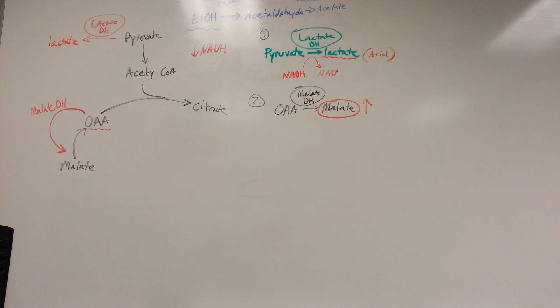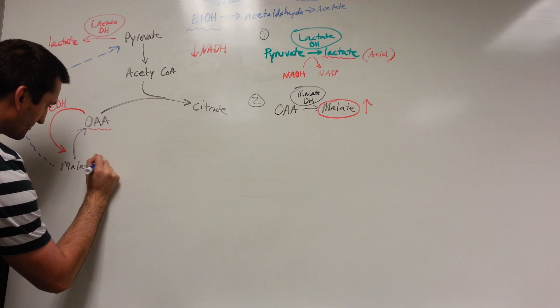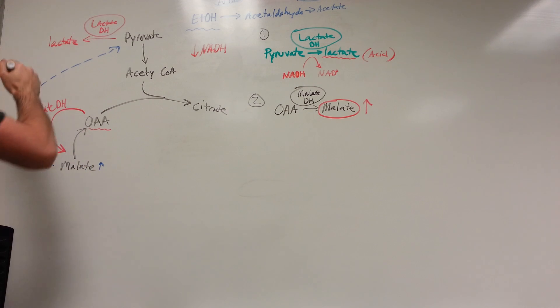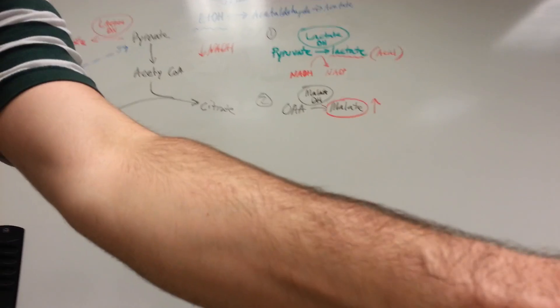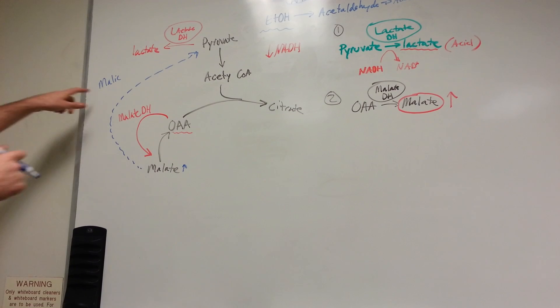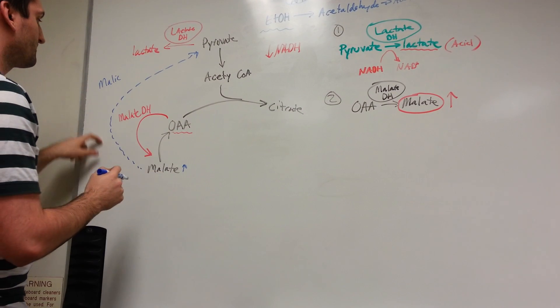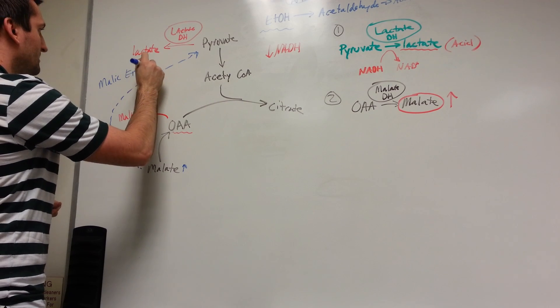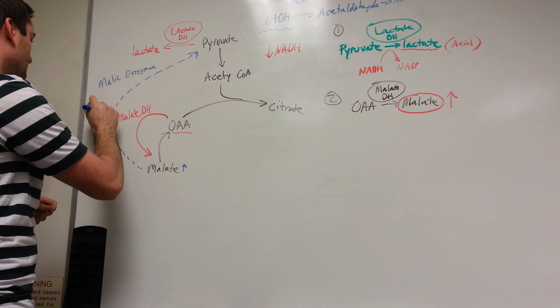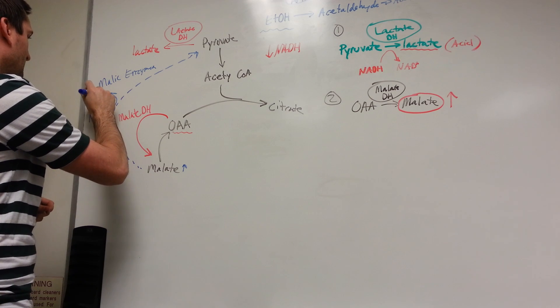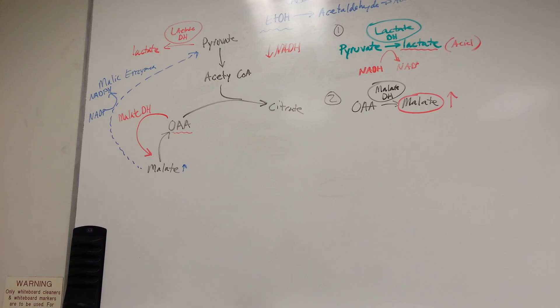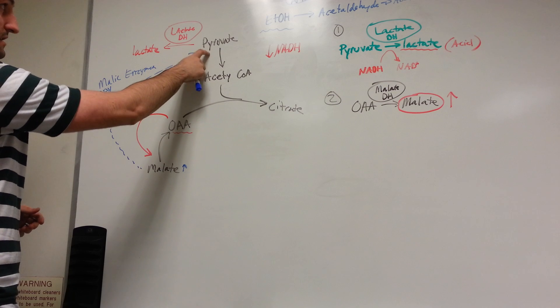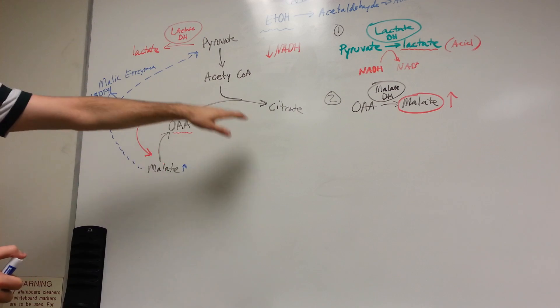Well, we have malic enzymes, which we're going to use. That's going to convert malate into pyruvate. We have this being increased now since we're converting OAA into malate. So now we're converting malate into pyruvate using malic enzymes. And what this is going to do is convert NADP into NADPH.